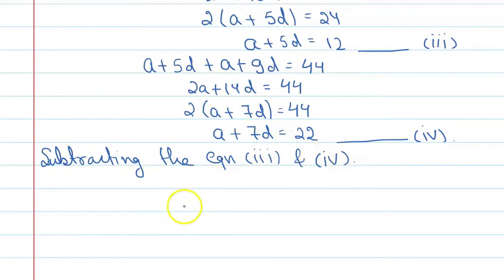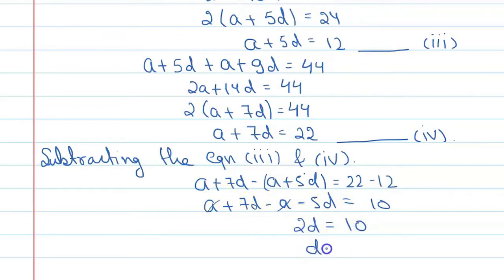Subtracting equation 3 and 4. You can say A plus 7d minus (A plus 5d) equal to 22 minus 12. So, if you solve it, then A will cancel. A plus 7d minus A minus 5d equal to 10. So, this A and this A will get cancelled. 7d minus 5d that is 2d equal to 10 and d is equal to 5.